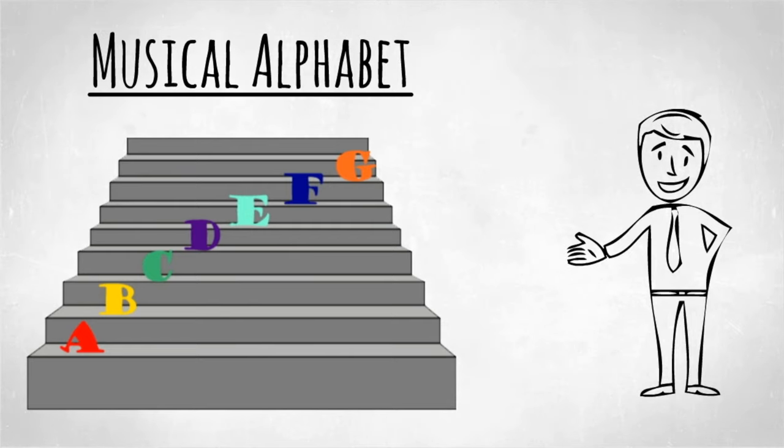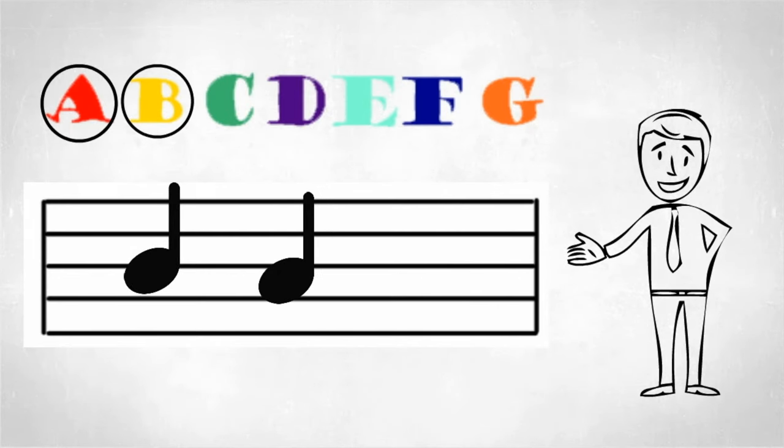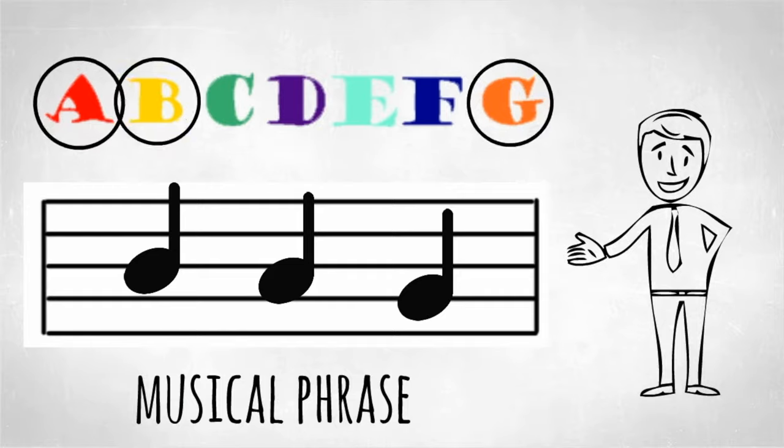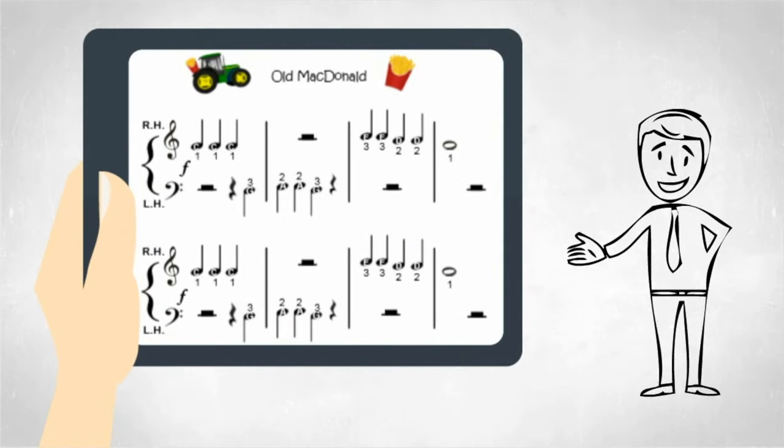The musical alphabet kind of works like the English alphabet, except we only have seven letters in the music alphabet: A, B, C, D, E, F, and G. Instead of making sentences, we make melodies and harmonies with the music alphabet called a musical phrase. And with these musical phrases, we then can create an entire piece of music.